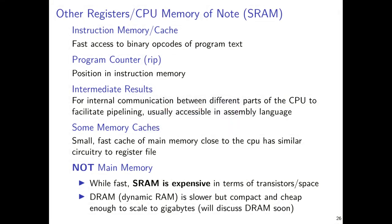We left off last time after having introduced two important elements into the computing system. The first was a clock circuit, and we'll talk about clock frequency as we move forwards with respect to operational efficiency. The second was an interesting set of feedback circuits known at the low level as SR latches, which you can combine into a flip-flop. Their primary intent is to create a storage unit, usually referred to as SRAM or static RAM, which allows you to store individual bits in a circuit.